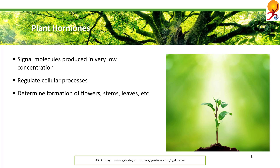Hormones also determine the formation of flowers, stems, leaves, the shedding of leaves, and the development and ripening of fruits. Plants, unlike animals, lack glands that produce and secrete hormones. Instead, each cell is capable of producing hormones.